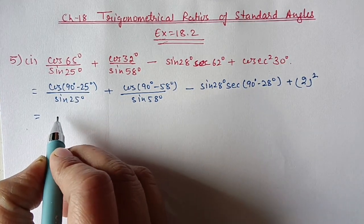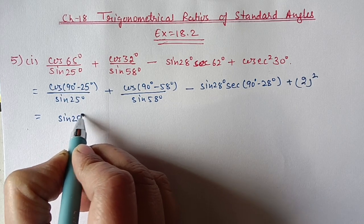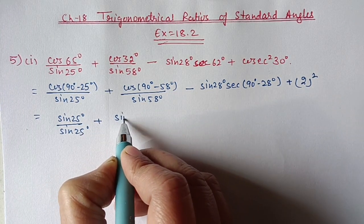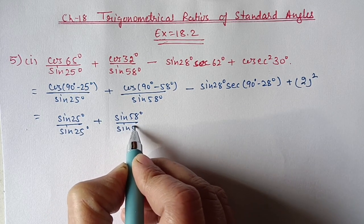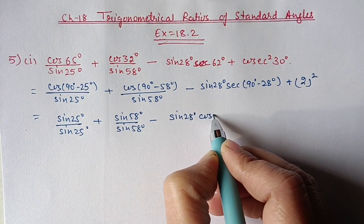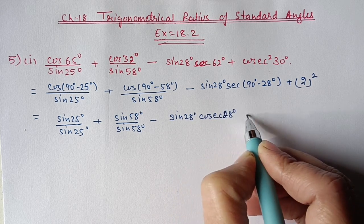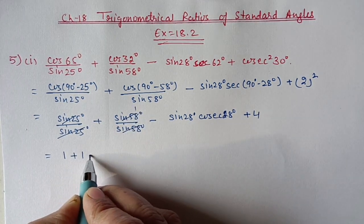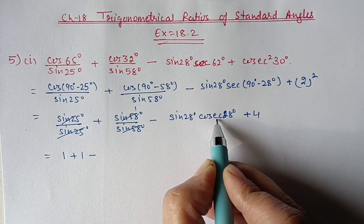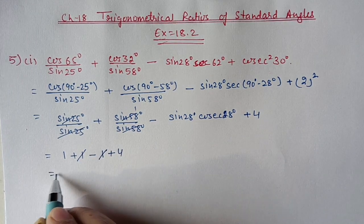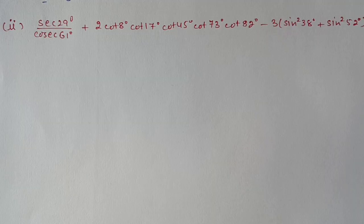cos(90−25) will be sin25 upon sin25, then cos(90−58) will become sin58 upon sin58. sin28 as it is and sec(90−28) will become cosec28, plus 4. This will cancel out, become 1; this one also will become 1. And sin into cosec for the same angle — cosec we can write as 1 upon sin — so this also will become 1. So 1 plus 4: answer will be 5.